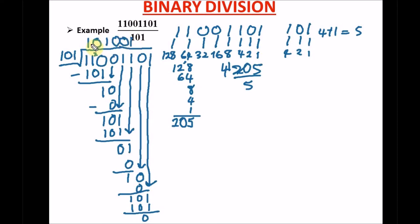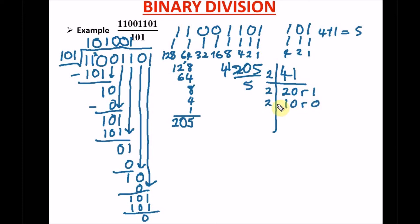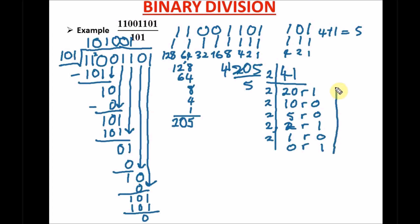So we expect our binary answer to equal 41 in decimal. Let's convert 41 to binary. 2 into 41 is 20 remainder 1; 2 into 20 is 10 remainder 0; 2 into 10 is 5 remainder 0; 2 into 5 is 2 remainder 1; 2 into 2 is 1 remainder 0; 2 into 1 is 0 remainder 1. Reading remainders in reverse order: 1 0 1 0 0 1. That matches our answer, so our answer is confirmed correct.